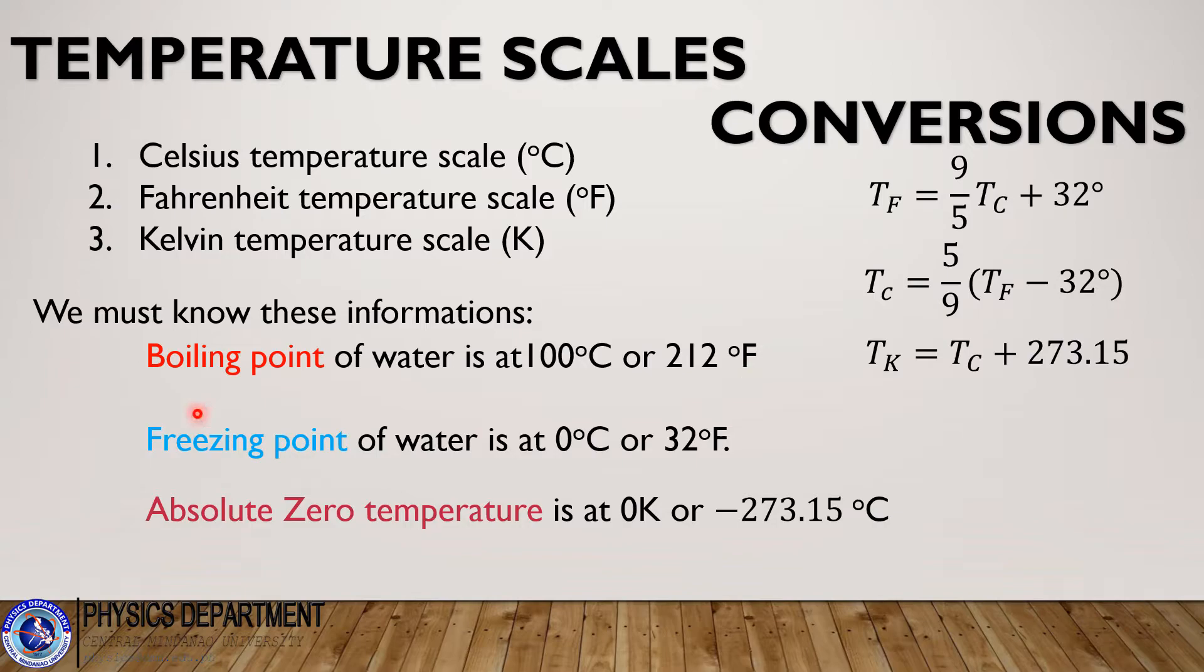Some information that we must know: the boiling point of water is at 100 degrees Celsius or 212 degrees Fahrenheit. The freezing point of water is at 0 degrees Celsius or 32 degrees Fahrenheit. And the absolute zero temperature is at 0 Kelvin or minus 273.15 degrees Celsius. Absolute zero temperature is the lowest possible temperature, and that is at 0 Kelvin.